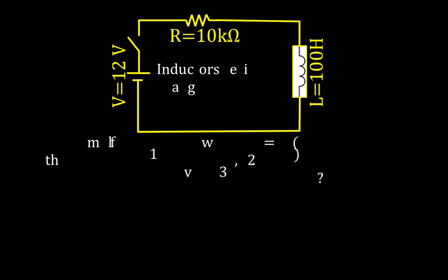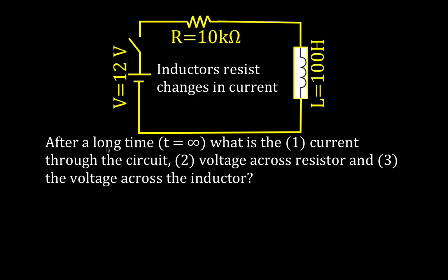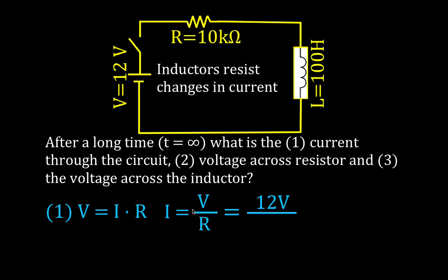Now we have the same circuit, but after the switch has been closed for a long time — T equals infinity, though it's not literally infinity; it could be 10 or 20 seconds, just after the current has come to steady state. After a long time, the inductor can't resist that changing current forever, so the current increases. The current through the circuit equals the voltage divided by the resistance: 12 volts divided by 10k ohms, which gives us 1.2 milliamps.